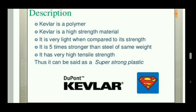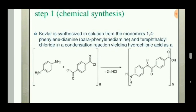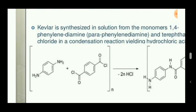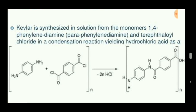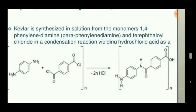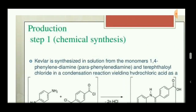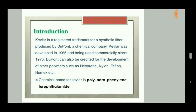It has very high tensile strength and is commonly called a super strong plastic. This is the chemical structure of the two compounds: para-phenylene diamine combined with terephthalyl chloride. With the removal of 2 HCl through a polymerization or condensation process, we obtain 1,4 poly-para-phenylene terephthalamide.